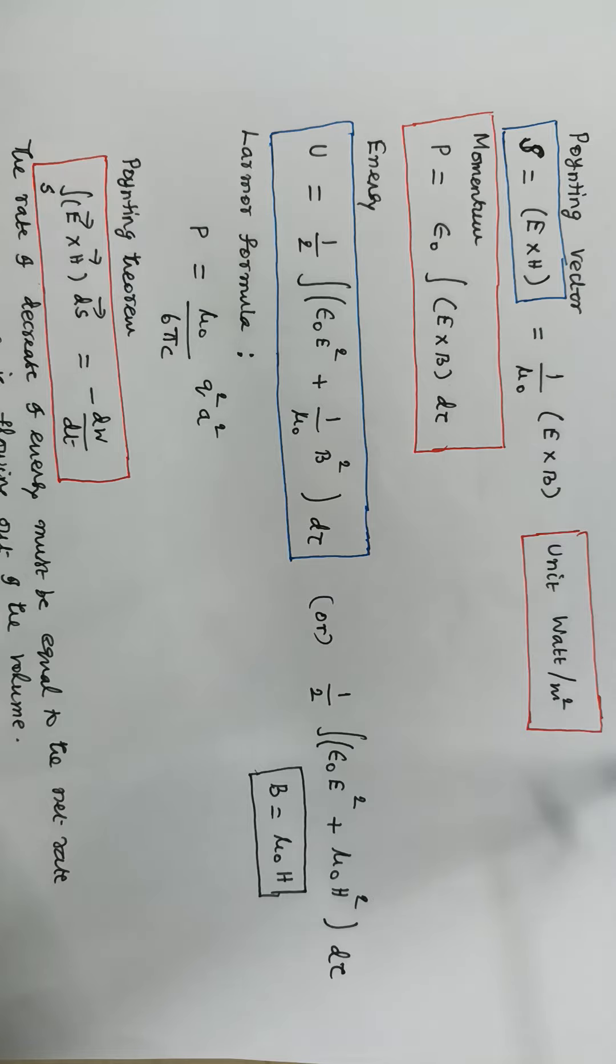Energy of the electromagnetic wave is given by the formula U equals 1 by 2 integral ε0 E square plus 1 by μ0 B square dτ.